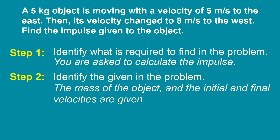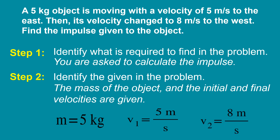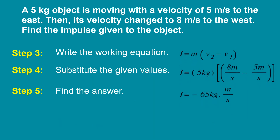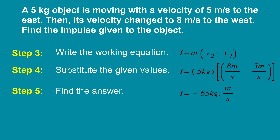To solve our sample problem, let's follow the following steps. Step 1: Identify what is required — you are asked to calculate the impulse. Step 2: Identify the given. The mass of the object and the initial and final velocities are given, where mass is equal to 5 kilograms, initial velocity is equal to 5 meters per second, and final velocity is equal to 8 meters per second. Step 3: Write the working equation. Impulse is equal to mass times final velocity minus initial velocity. By substituting the given values, impulse is equal to 5 kilograms times 8 meters per second minus 5 meters per second. And the final answer will be negative 65 kilogram meters per second.